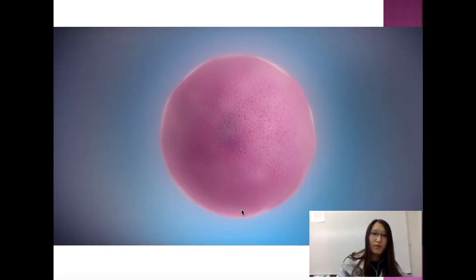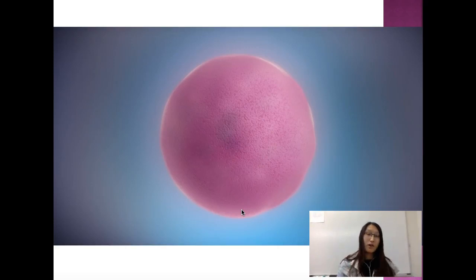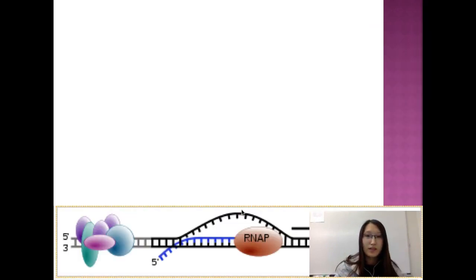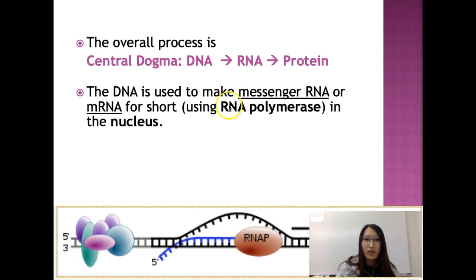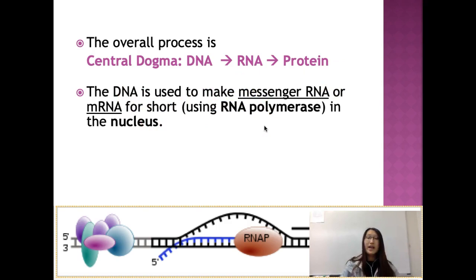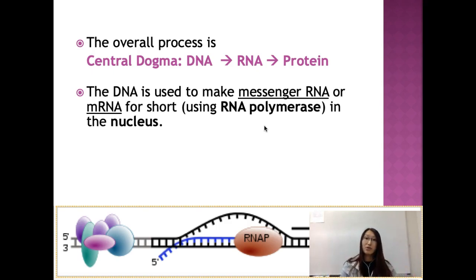This video is really wonderful. If you have not watched it because you missed class, or if you need a review, this video is posted — make sure that you do watch it. The overall process is central dogma: DNA to RNA to protein. DNA is used to make messenger RNA. It's called messenger RNA because it sends the message from the nucleus, where all the information is contained, to the cytoplasm in order to make protein — to build and actually do work.